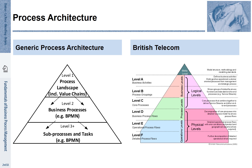If that is the case, we have one process landscape representation at the top level, then 10 more detailed representations on the next level, 100 on the third level, and so forth. In companies in practice, you often find several thousands of process models described as part of the process architecture.